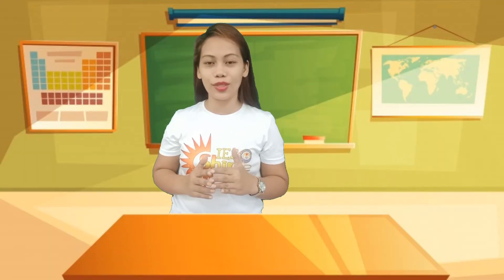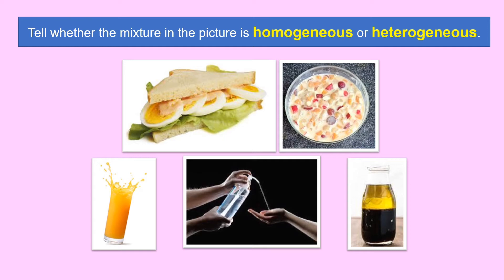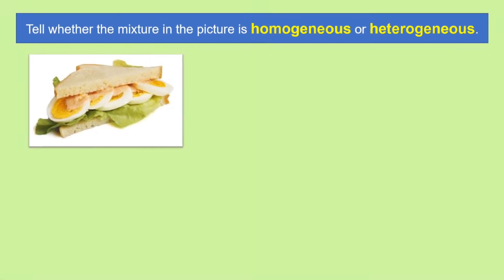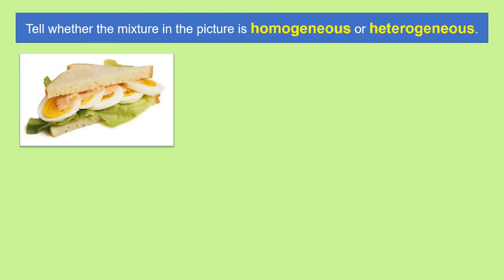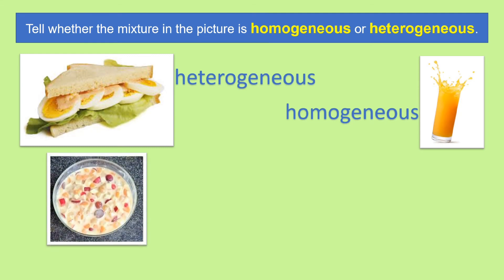So in this lesson, we are going to identify homogeneous and heterogeneous mixtures. I have a practice exercise for you. Tell whether the mixture in the picture is homogeneous or heterogeneous. Let's begin with the first picture — you have a sandwich. Do you like sandwiches? Is it homogeneous or heterogeneous? Correct — this is heterogeneous. Let us have the second picture. I love this together with the sandwich — this is orange juice in a glass. Is it homogeneous or heterogeneous? The answer is homogeneous. Let us have the third picture — this is fruit salad. Is it homogeneous or heterogeneous? Correct — this is heterogeneous.